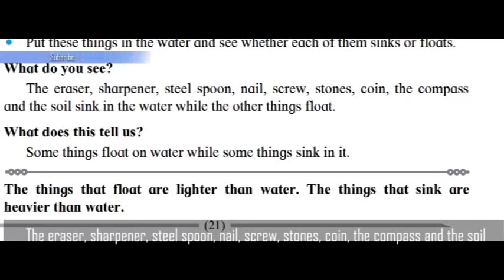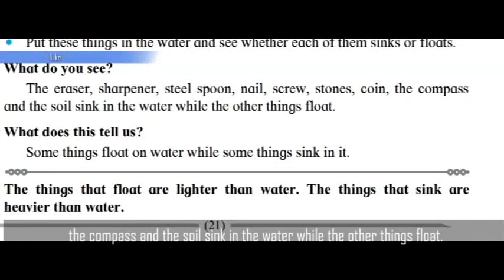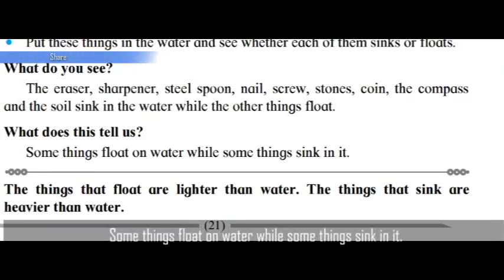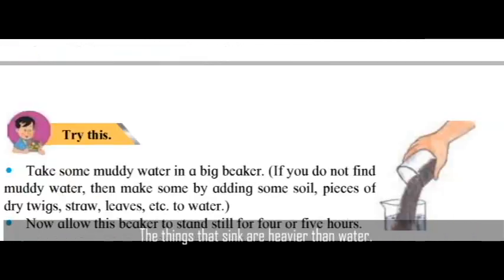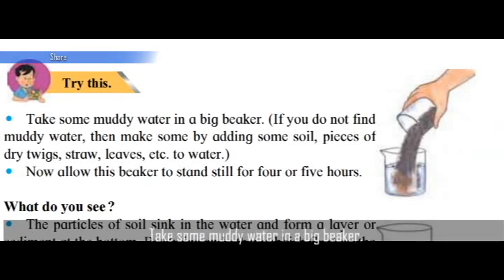What do you see? The eraser, sharpener, steel spoon, nail, screw, stones, coin, compass, and soil sink in the water, while the other things float. What does this tell us? Some things float on water while some things sink. The things that float are lighter than water; the things that sink are heavier than water.